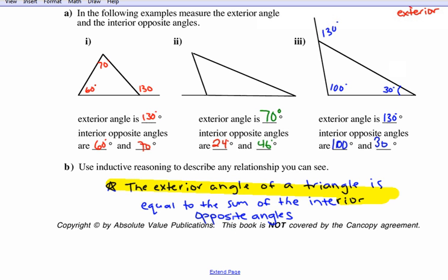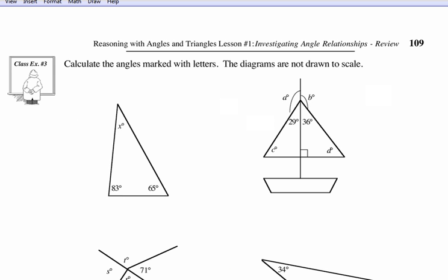This is a very important theorem: the exterior angle of a triangle equals the sum of the interior opposite angles. That theorem will come in handy when we do proofs and solve problems. For example, in a triangle we know all angles add to 180, so angle x equals 180 minus 83 minus 65, which gives 32 degrees.